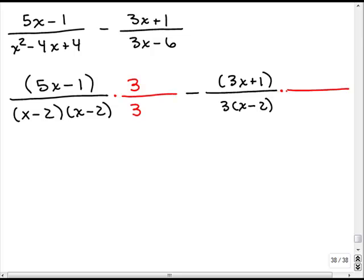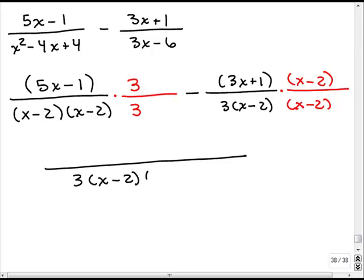So, for my second fraction, what I'm missing is a factor of x minus 2. Okay. All right. So, now we know what the least common denominator is. So, I could write everything over that least common denominator, 3 times x minus 2 times x minus 2. And, it's fine with me if you want to write that as x minus 2 squared. Either way is fine.